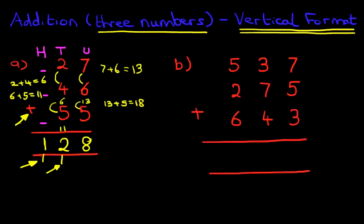They're nicely spaced out. So this question is, what is 537 plus 275 plus 643? Let's label the columns. We've got units, tens, and hundreds.